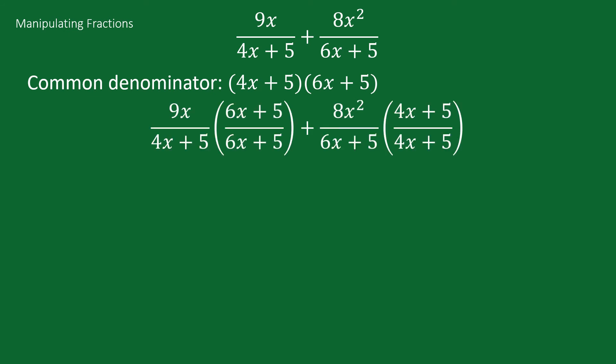So we have 9x over 4x plus 5 times 6x plus 5 over 6x plus 5 plus 8x squared over 6x plus 5 times 4x plus 5 over 4x plus 5. And rewriting that a little bit, we just get 9x times 6x plus 5 plus 8x squared times 4x plus 5 all over 4x plus 5 times 6x plus 5.